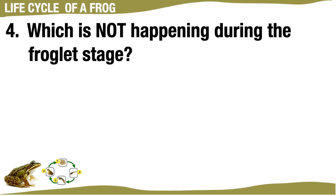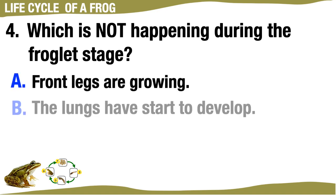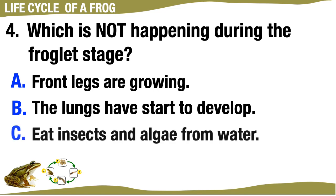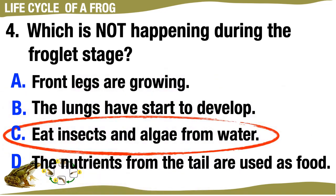Which is not happening during the froglet stage? A. Front legs are growing. B. The lungs have started to develop. C. Eat insects and algae from water. D. The nutrients from the tail are used as food. The correct answer is C, eat insects and algae from water.